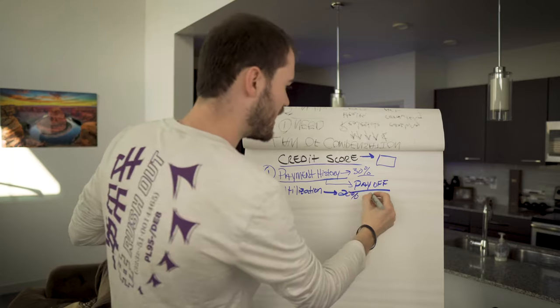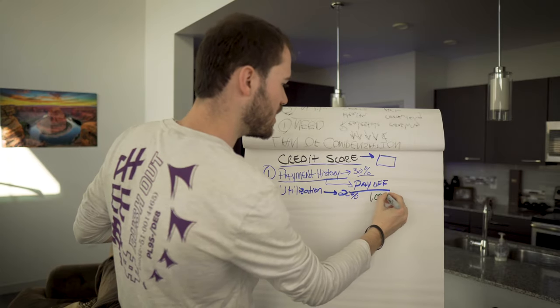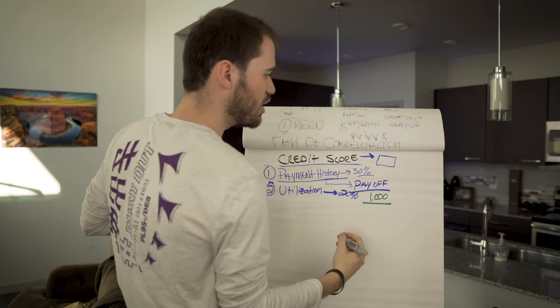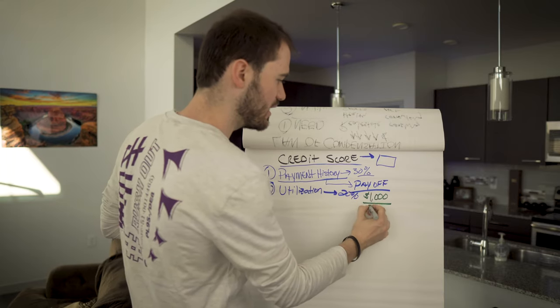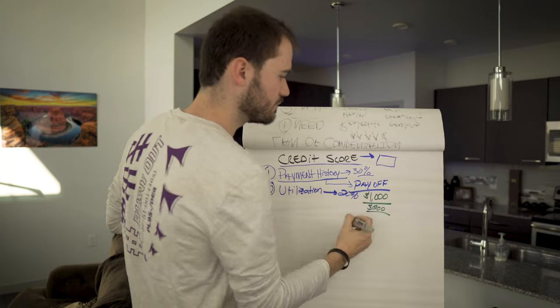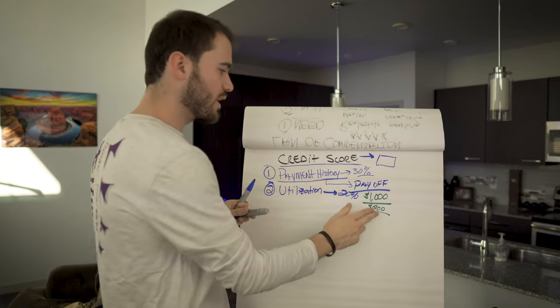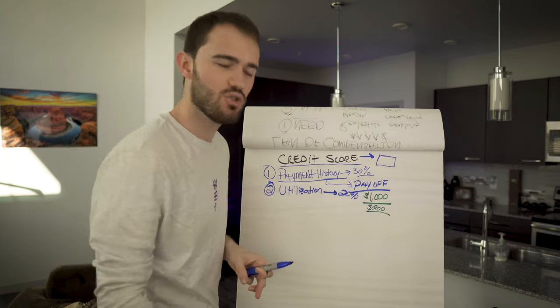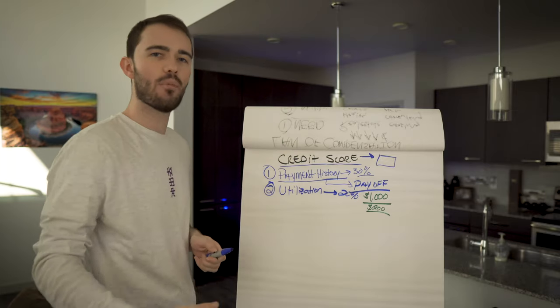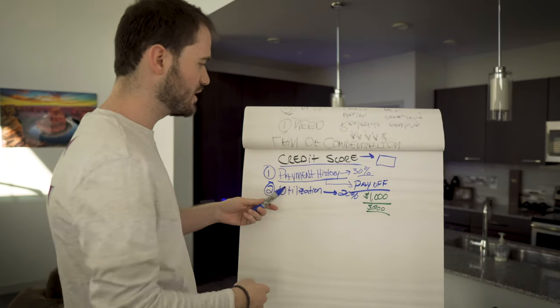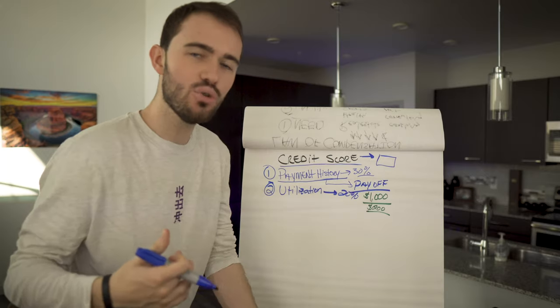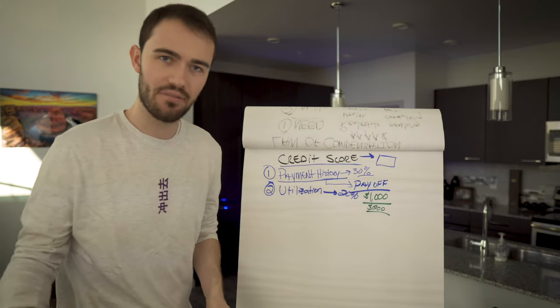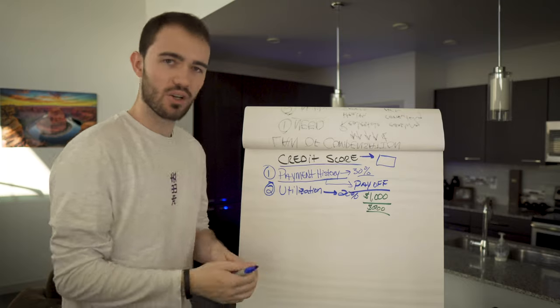Let's say you've got a $1,000 credit limit. The max you should be using on that credit card and spending is $200. Okay, meaning 20% is the max you should be spending any given time on credit cards. The reason that this is, is this shows the banks that you are not using them in order to live.